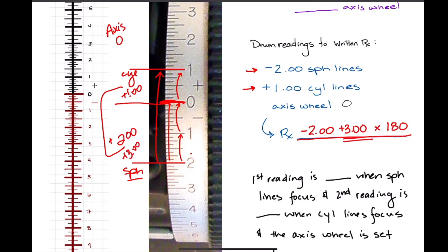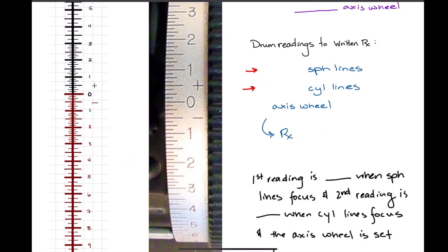Let's try another one. Let's say we focus right here for our sphere reading, and then we're focused right here for our cylinder reading. So anyone take a crack at what the actual sphere reading was that we got? Negative 2.87. Yeah.